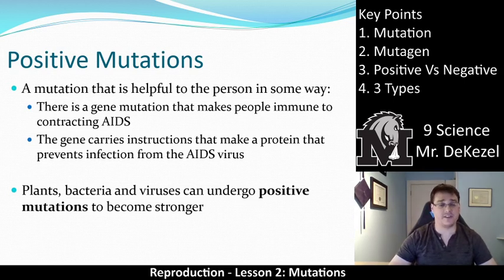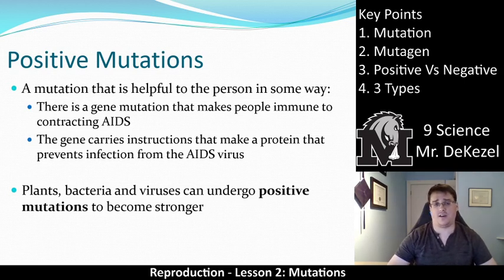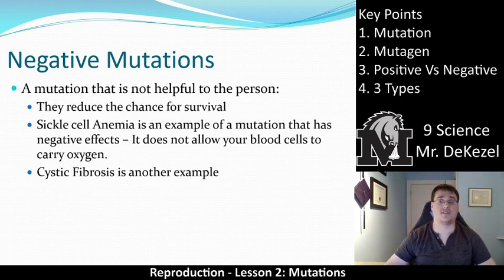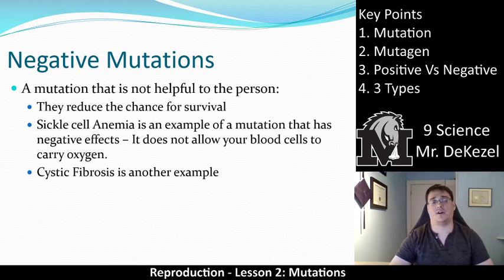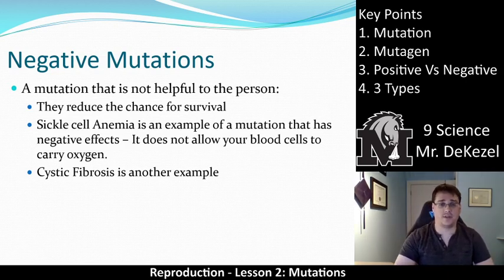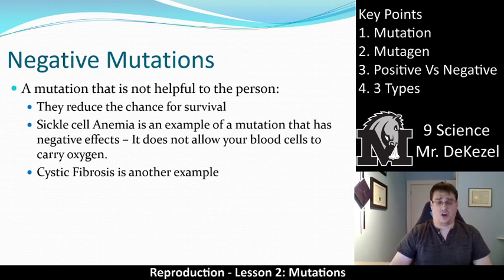Positive mutations make things stronger. Negative mutations — this is all key point three — are not helpful to the person and essentially reduce the chance for survival. Sickle cell anemia makes your blood cells look like curved sickles and they cannot carry oxygen as well. Cystic fibrosis is another example of negative mutations — things that hurt the person.